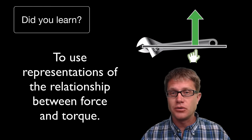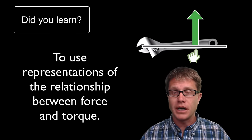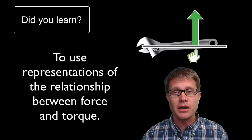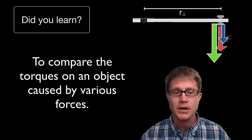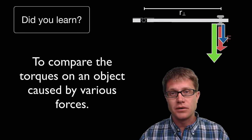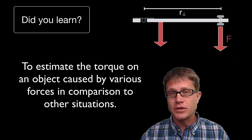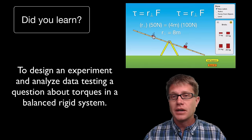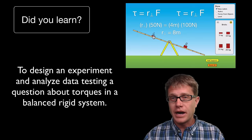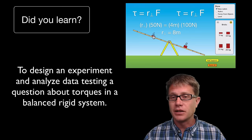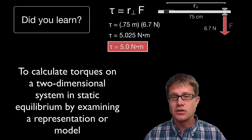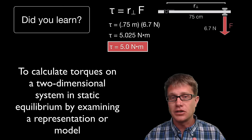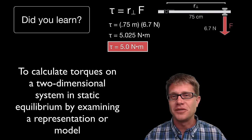Did you learn the relationship between force and torque? We multiply the force times the lever arm. Applying different forces increases the torque, and moving a force inward decreases torque by decreasing the lever arm. Can you design an experiment to manipulate these balanced forces — like we did with the teeter-totter? And can you calculate torque in a two-dimensional system like this? I hope so, and I hope that was helpful.